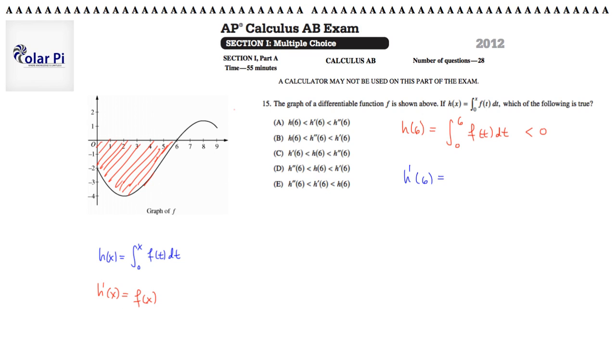So, h prime of 6 is just asking for f of 6. And I'll do that in blue, as I started. So that's asking for f of 6. Cool. f of 6, since we have f, is clearly 0. So this is equal to 0. Hey, so far, so good. I know that that's less than 0. This is 0. Hopefully, I get that the next guy is greater than 0, and I'm done.